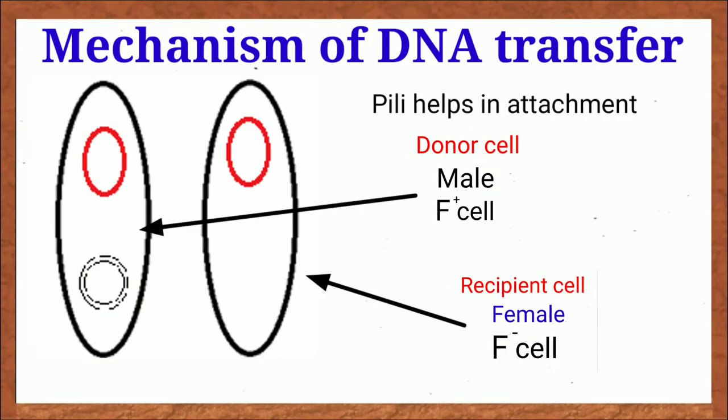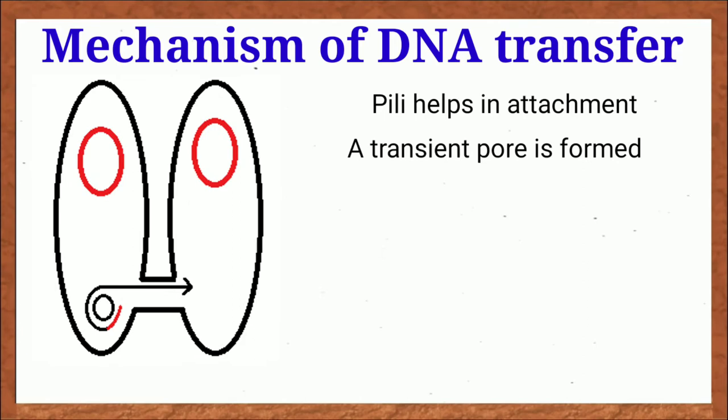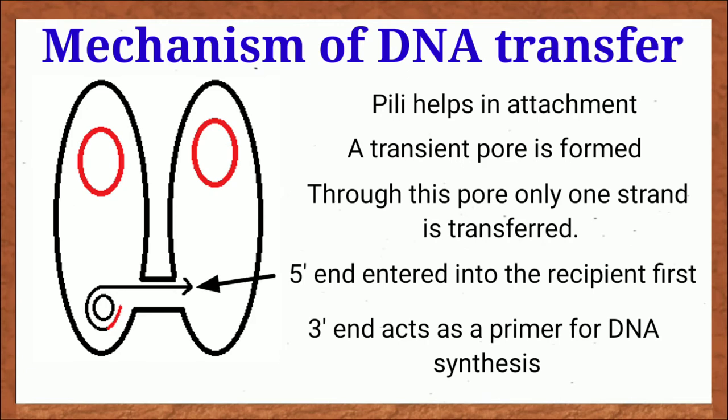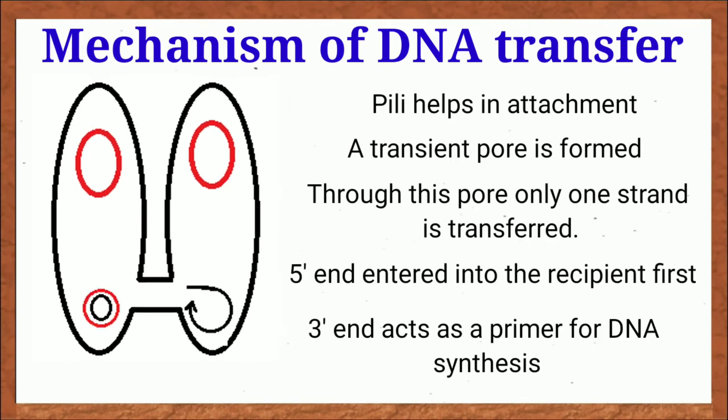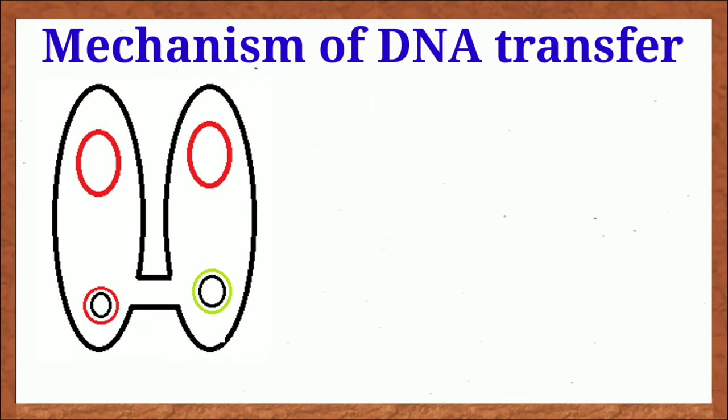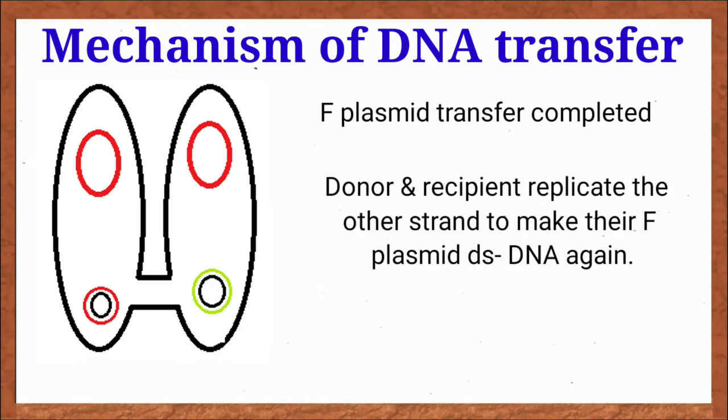During transfer, a single strand break is initiated at this region and one strand of the double-stranded DNA is ready for transfer. 5' end of the strand enters into the recipient first and 3' end serves as a primer for the replication. As more and more DNA enters into the recipient cell, a new DNA strand is being synthesized, taking other strand as template.